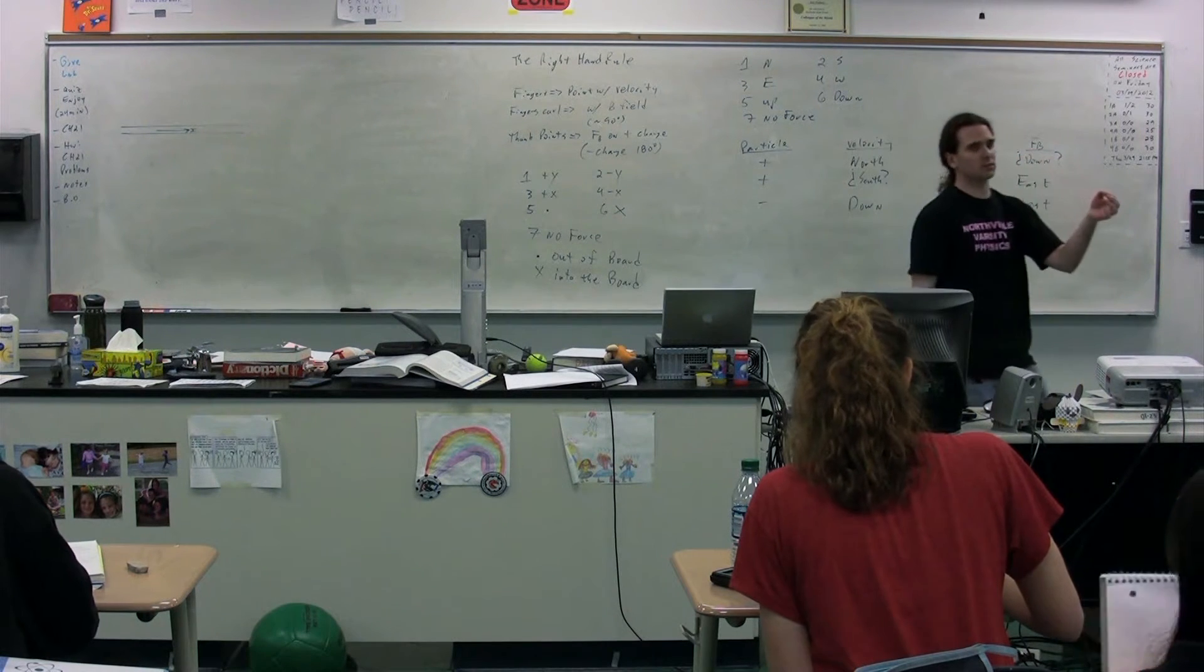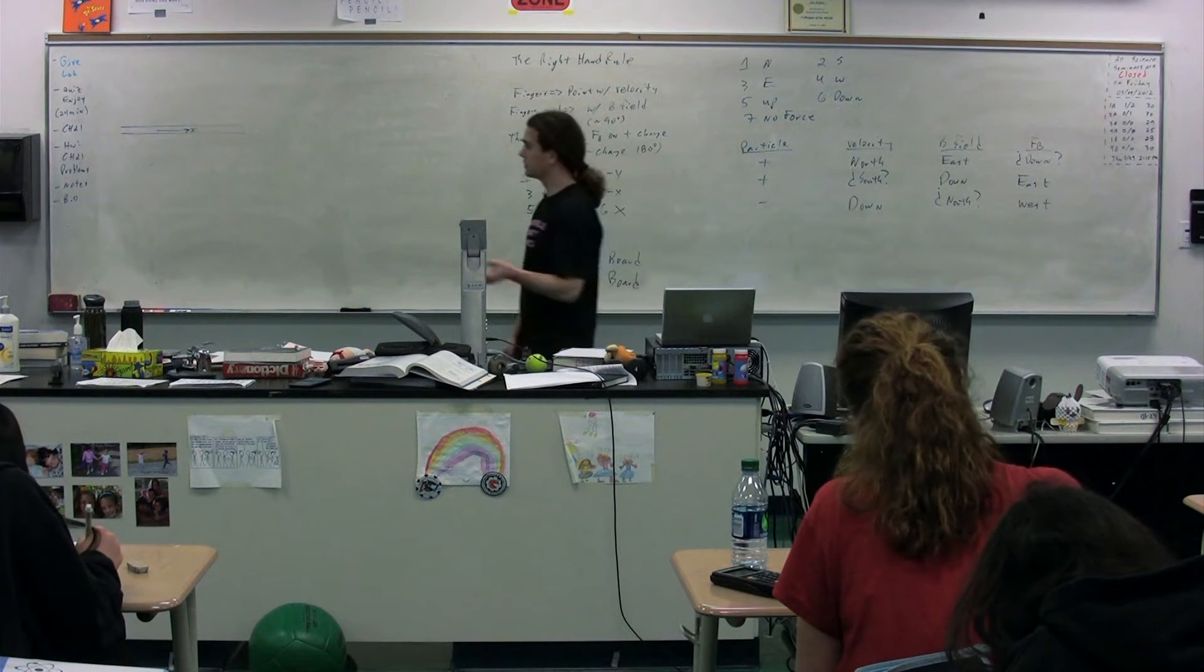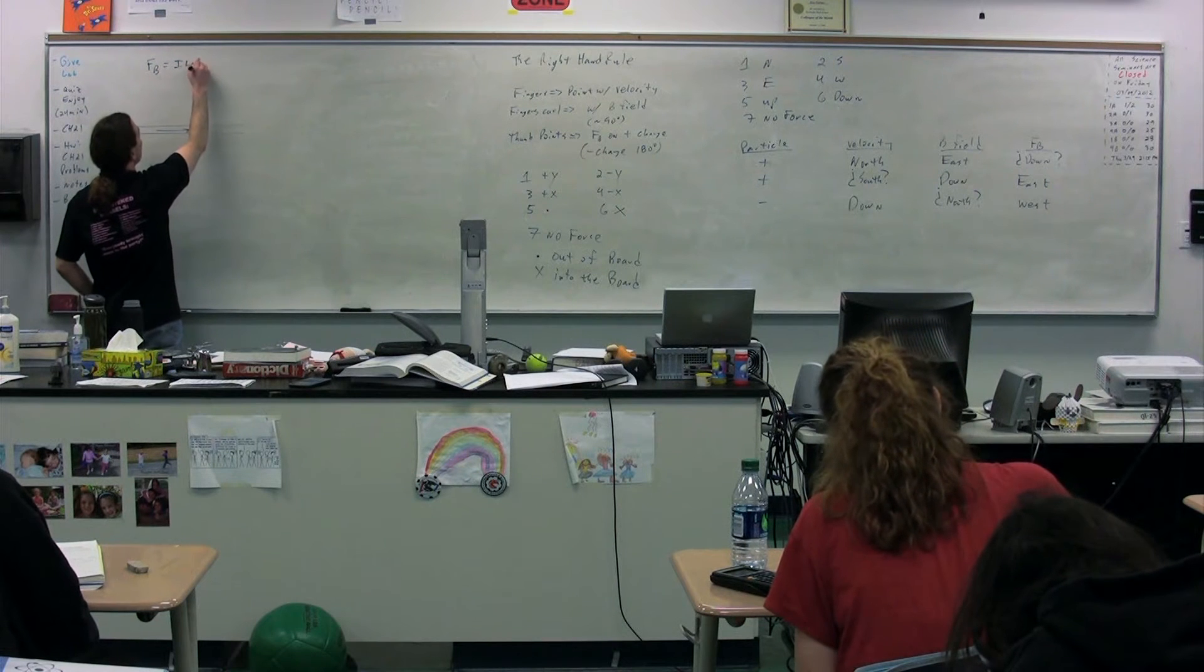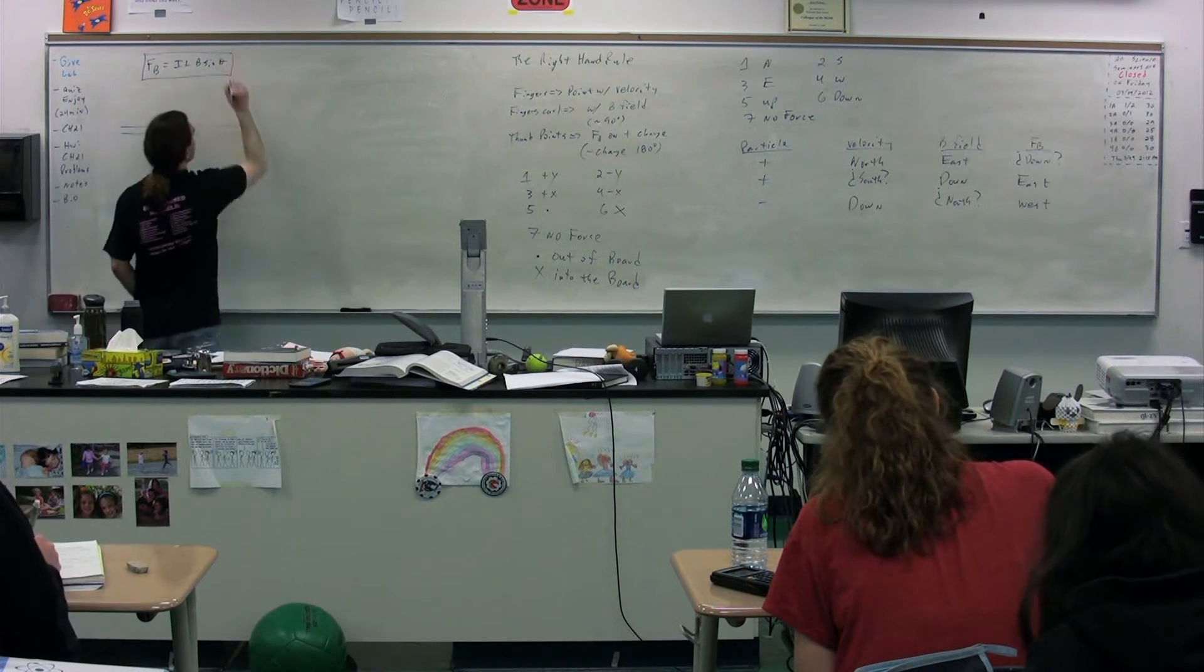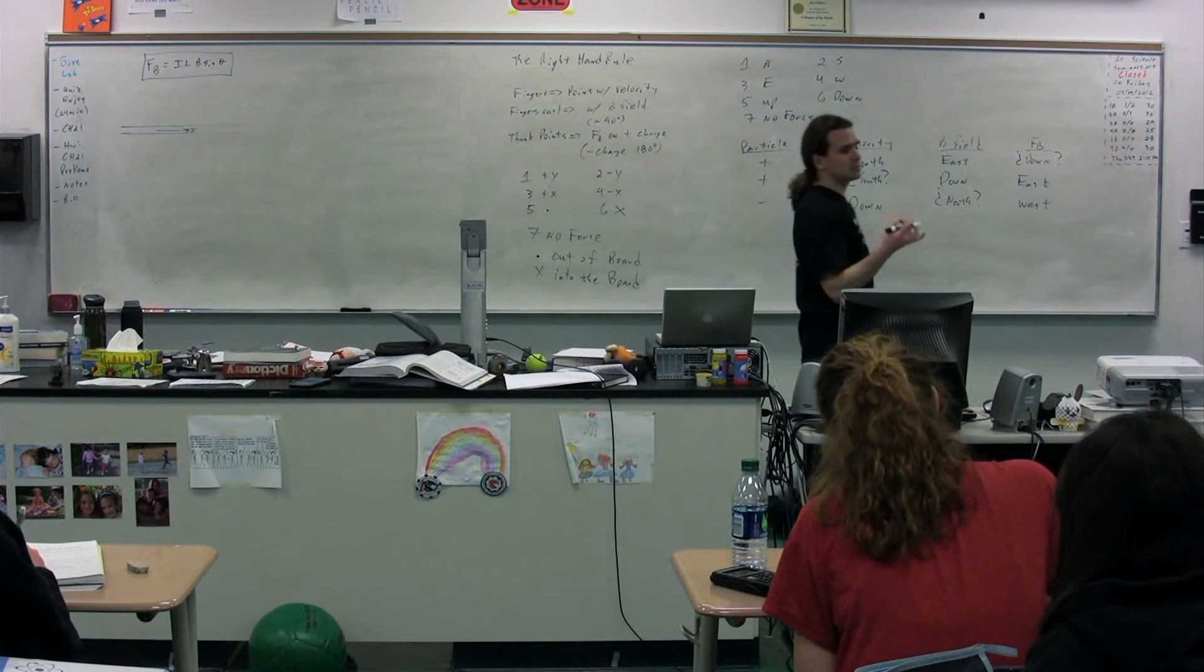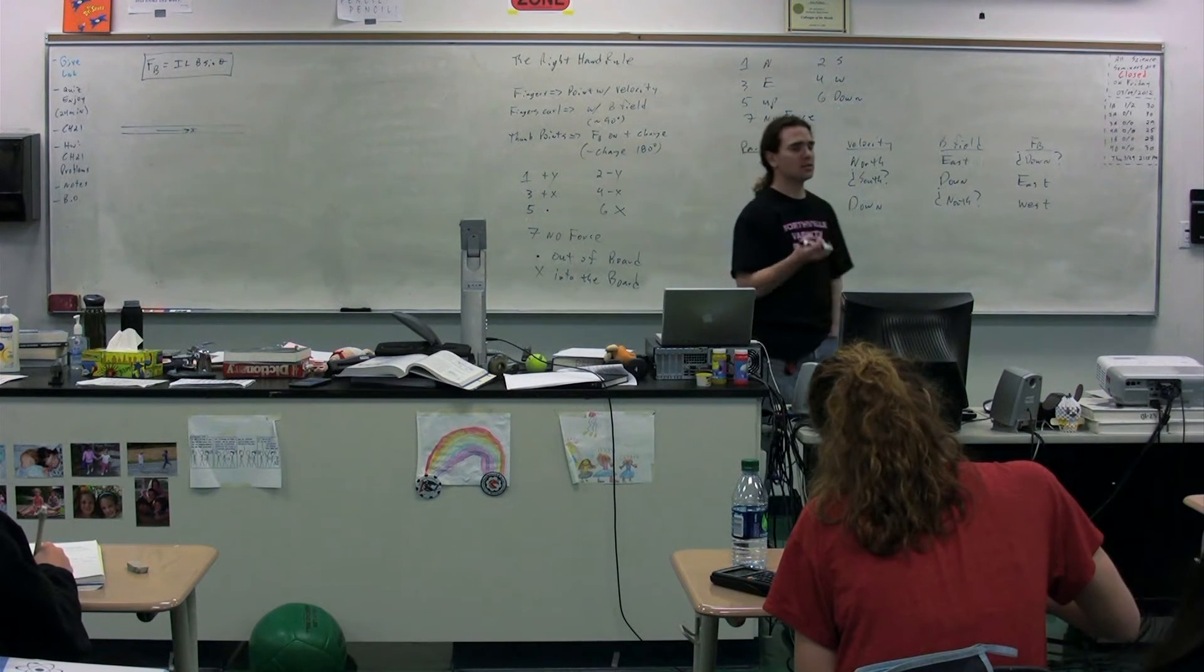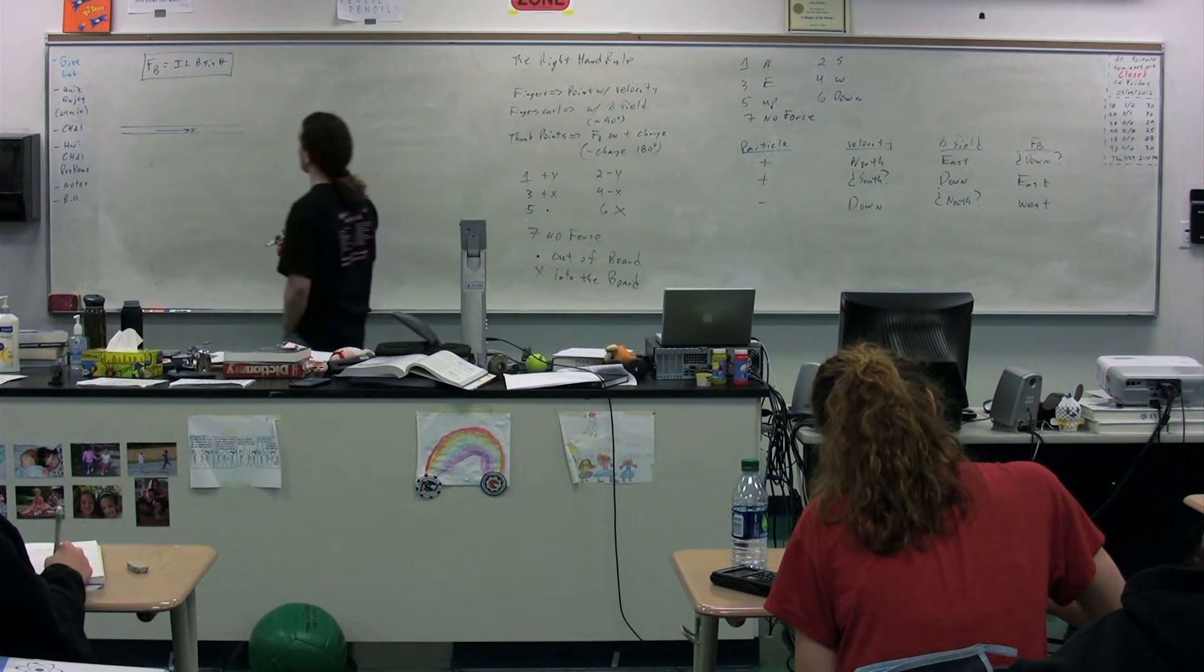So up until this point, we'd talked about single charges. Well, this could also apply to a group of charges, which would be current. And the magnetic force would then be equal to the current times the length of the wire times the magnetic field times the sine of the angle. So notice this is very much like QVB sine theta - the charge times the velocity times the magnetic field times the sine of theta. Instead, we're talking about a group of charges, so we have current.